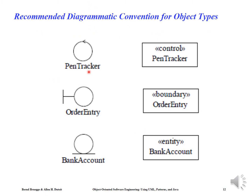To summarize, there are three ways to represent entity, boundary, and control objects. The first is to use UML stereotypes — control, boundary, or entity. The second is to append a suffix to the name of boundary and control objects. The third is to use diagrammatic conventions for the object types. Entity objects do not usually have any suffix appended to their name.